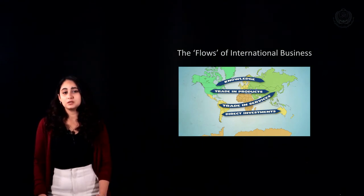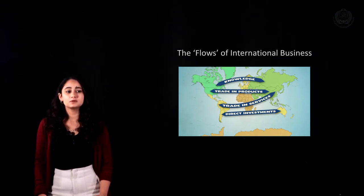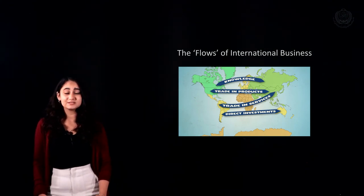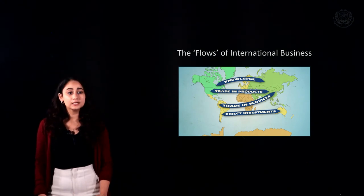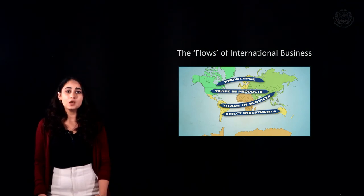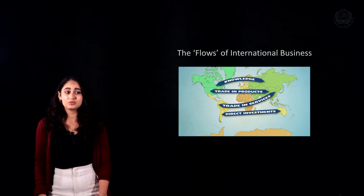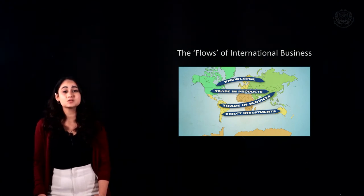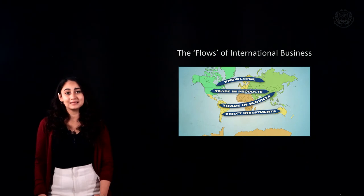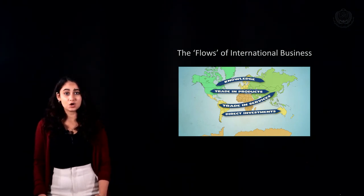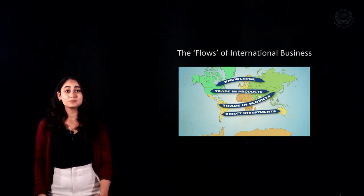There are four types of flows involved in every international business process: knowledge, trade in products, trade in services, and direct investment. In order to internationalize, a business will have financial transactions — that is, investment — operating and entering foreign markets to increase business operations, enter new markets, and increase market share. The product or service provided in the foreign market, along with direct investment, forms the core of international business activity.